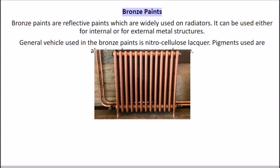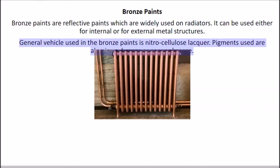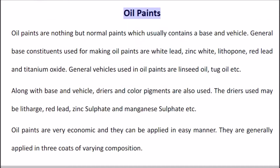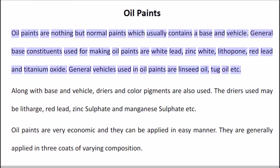Bronze paints are reflective paints which are widely used on radiators. They can be used for internal or external metal structures. The general vehicle used in bronze paints is nitrocellulose lacquer, and the pigments used are aluminum bronze or copper bronze. Oil paints are normal paints which contain a base and vehicle. Common base constituents include white lead, zinc white, lithopone, red lead, and titanium oxide. General vehicles used in oil paints are linseed oil and tung oil.